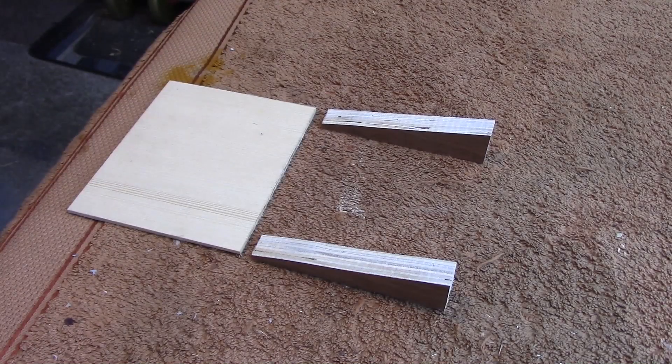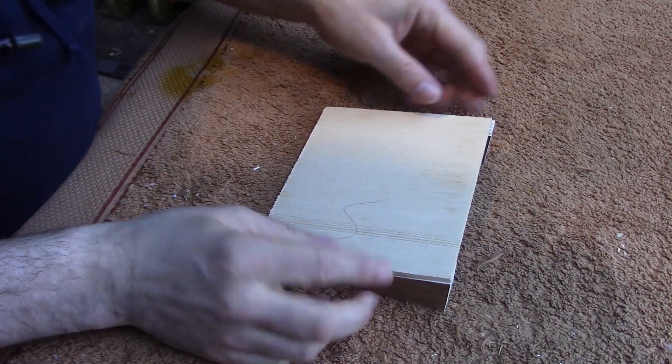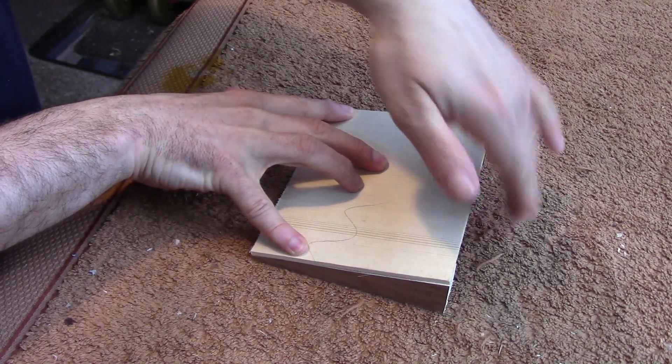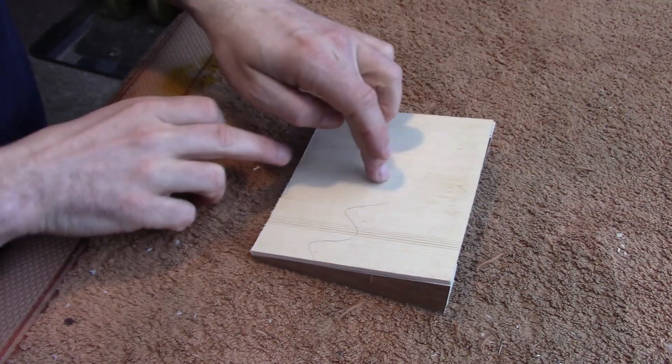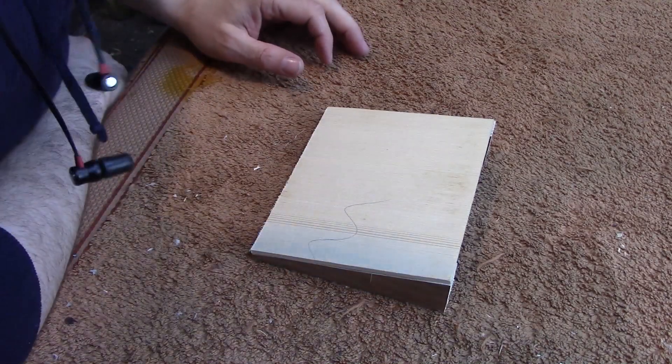So we've got our two wedges here now. And all we're going to do is glue and screw this spruce piece on top. And then once we've done that we'll add some reinforcement to the back and to the front here. So we should have a little bit of flex in it. But not too much or the whole thing will break.